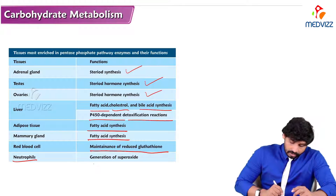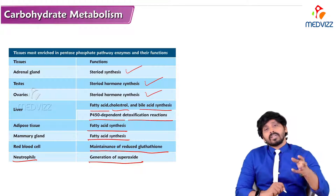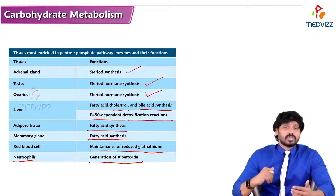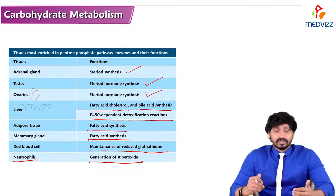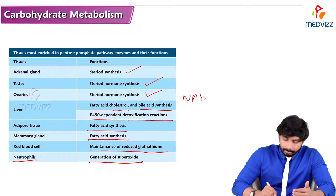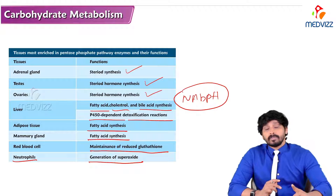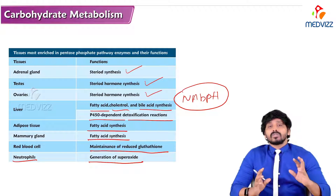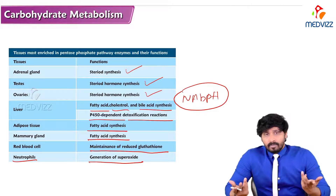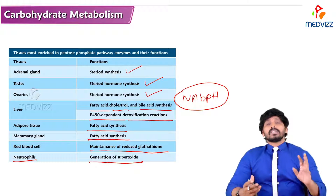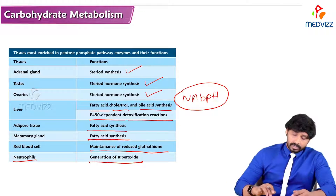Neutrophils require NADPH for generation of superoxide ions. All these pathways require NADPH, and the source of NADPH in our body is HMP shunt. This is one of the major viva questions or competitive exam questions: NADPH in our body is produced from which metabolic pathway? The answer is HMP shunt, or vice versa.